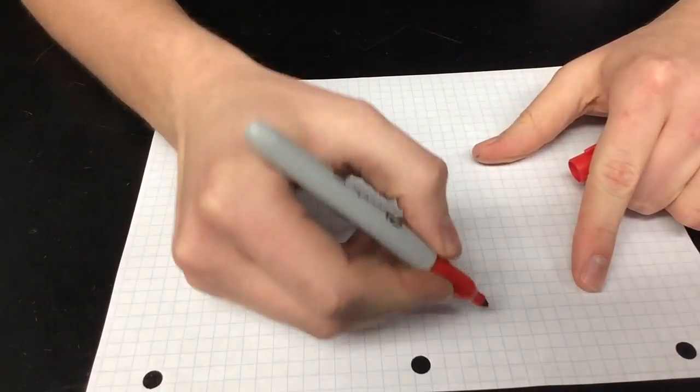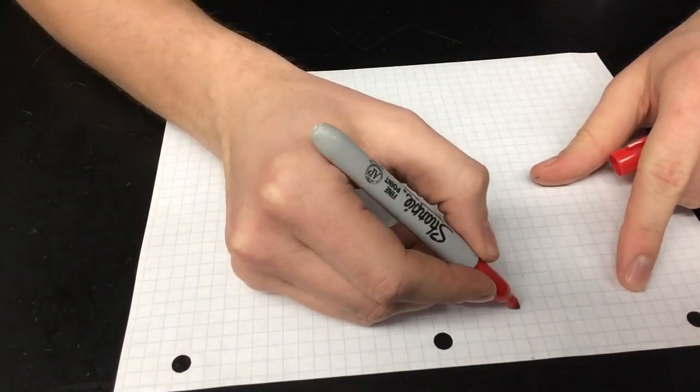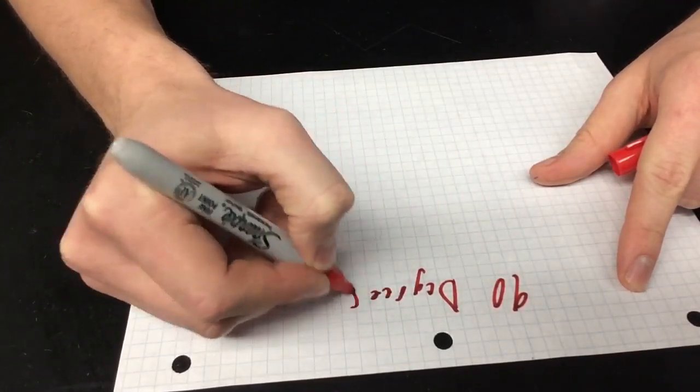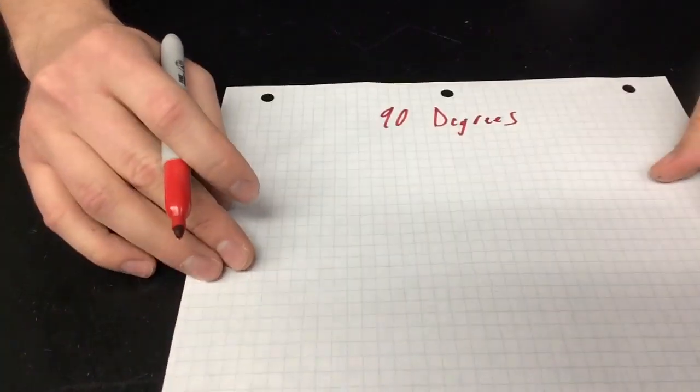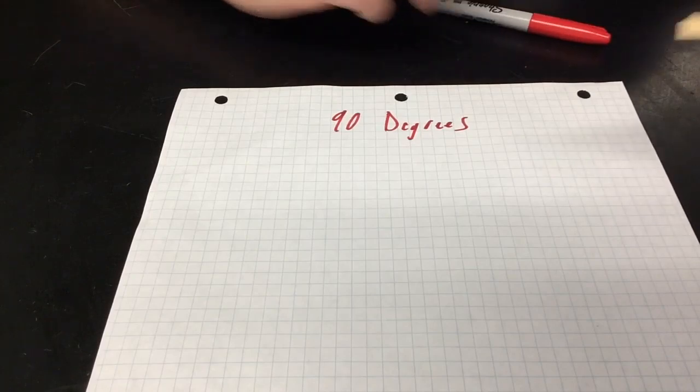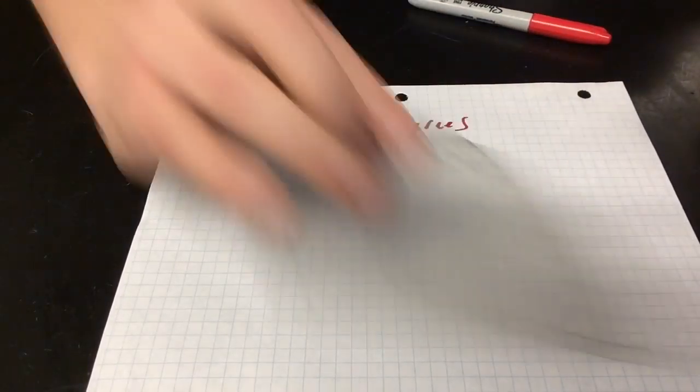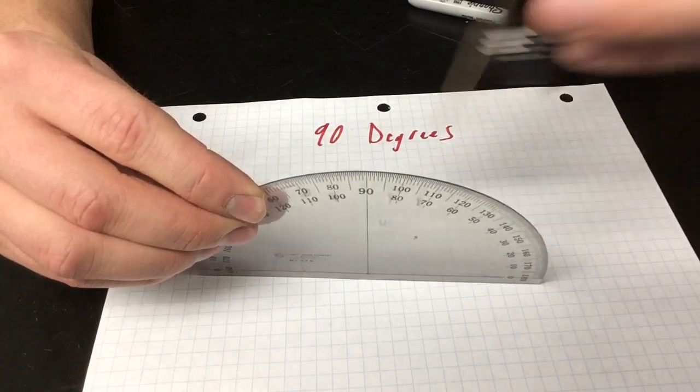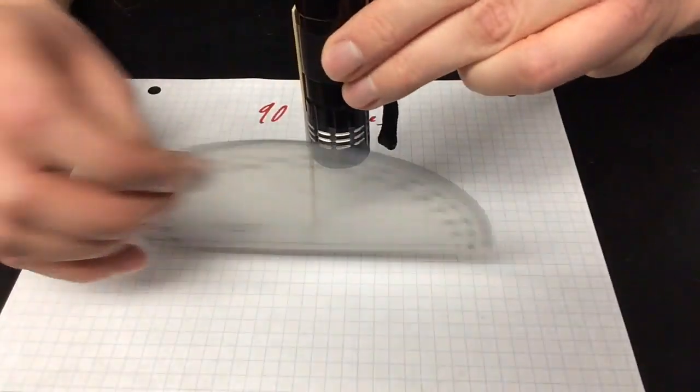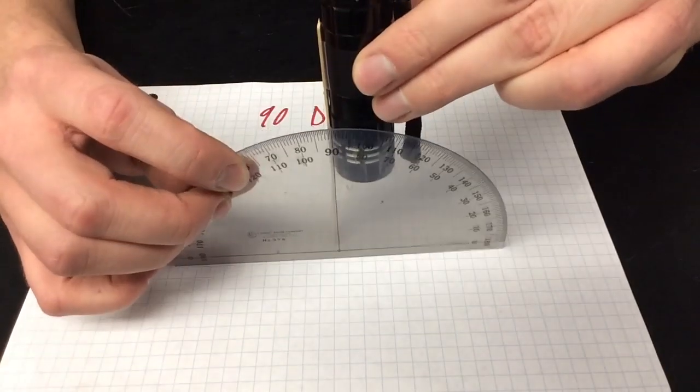Now for the first one it says that you need to write 90 degrees at the top of the paper. So I'm going to go ahead and again I'm doing this upside down. So I'm going to do 90 degrees. Okay. So there you go. You have 90 degrees written on the paper. Okay. Then you need to actually set it to 90 degrees. So if you have your compass you can go ahead and you can set it at 90 degrees. So notice how I put it straight up and down.